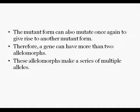As we said, one form is wild type and another is mutant. From one mutant form, another mutant form can arise. When two alleles are present for a particular gene, one more allele can be produced, so the gene will have more than two alleles. When a gene has more than two alternative forms or allelomorphs, these are called multiple alleles.